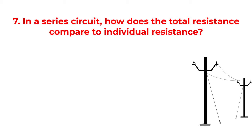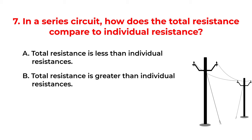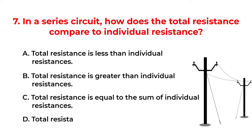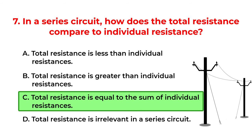In a series circuit, how does the total resistance compare to individual resistances? A. Total resistance is less than individual resistances. B. Total resistance is greater than individual resistances. C. Total resistance is equal to the sum of individual resistances. D. Total resistance is irrelevant in a series circuit. The correct answer is option C: Total resistance is equal to the sum of individual resistances.